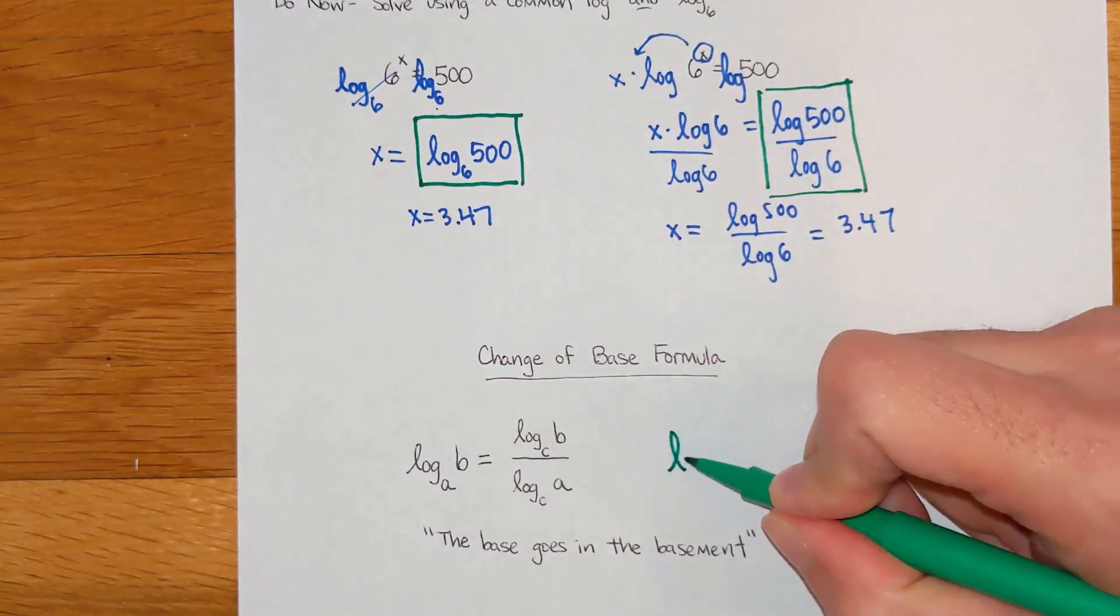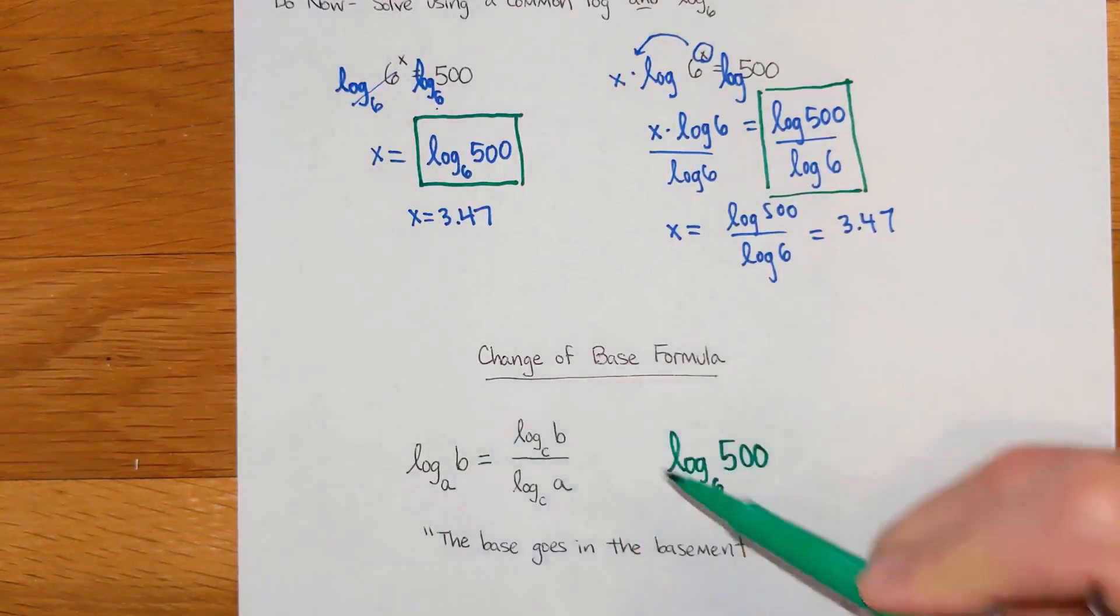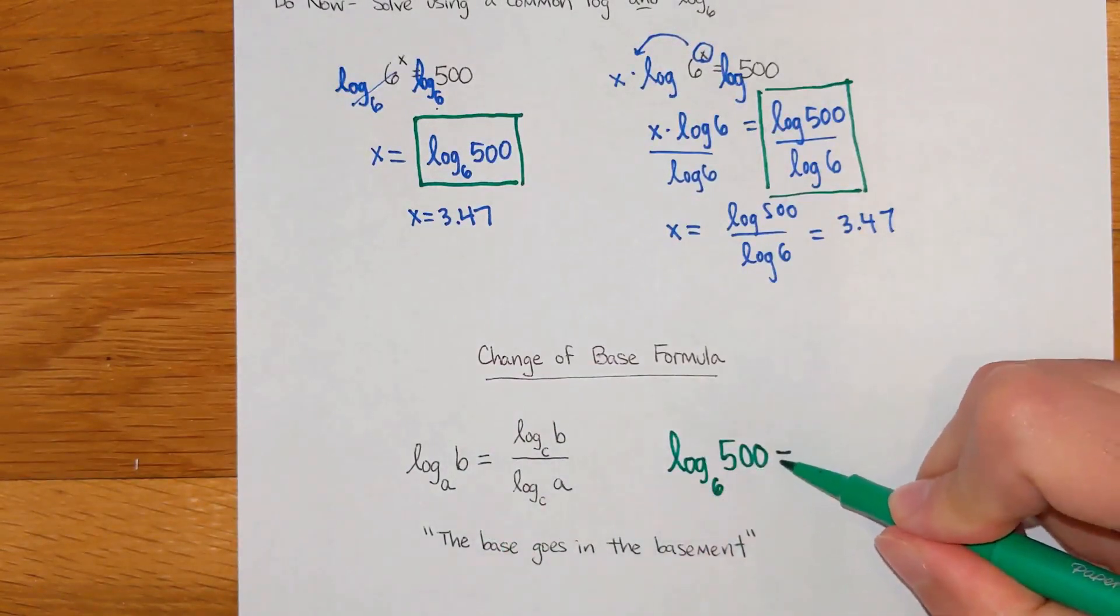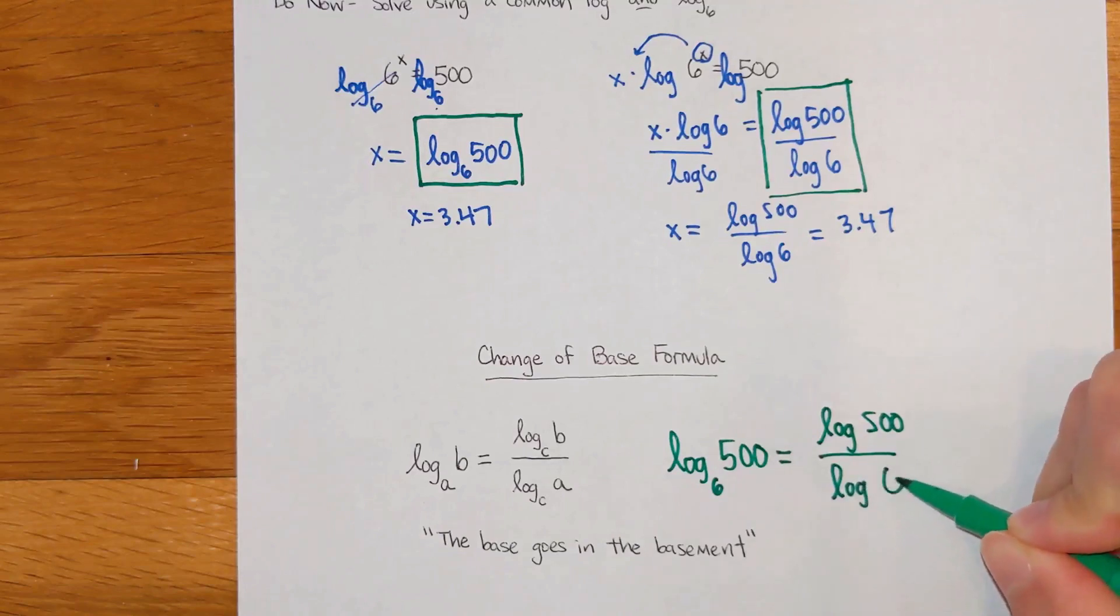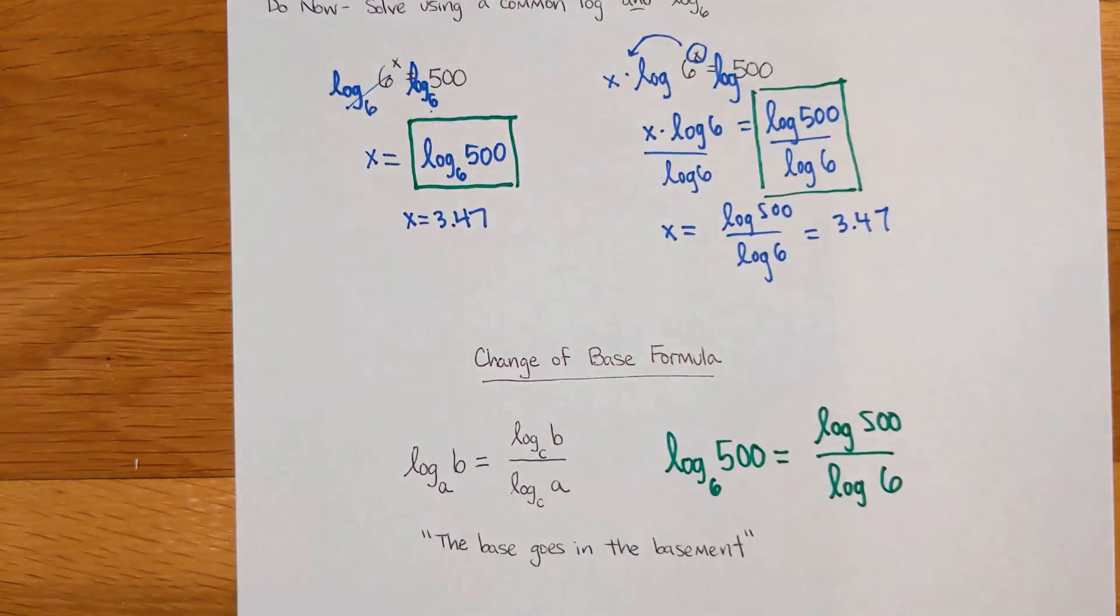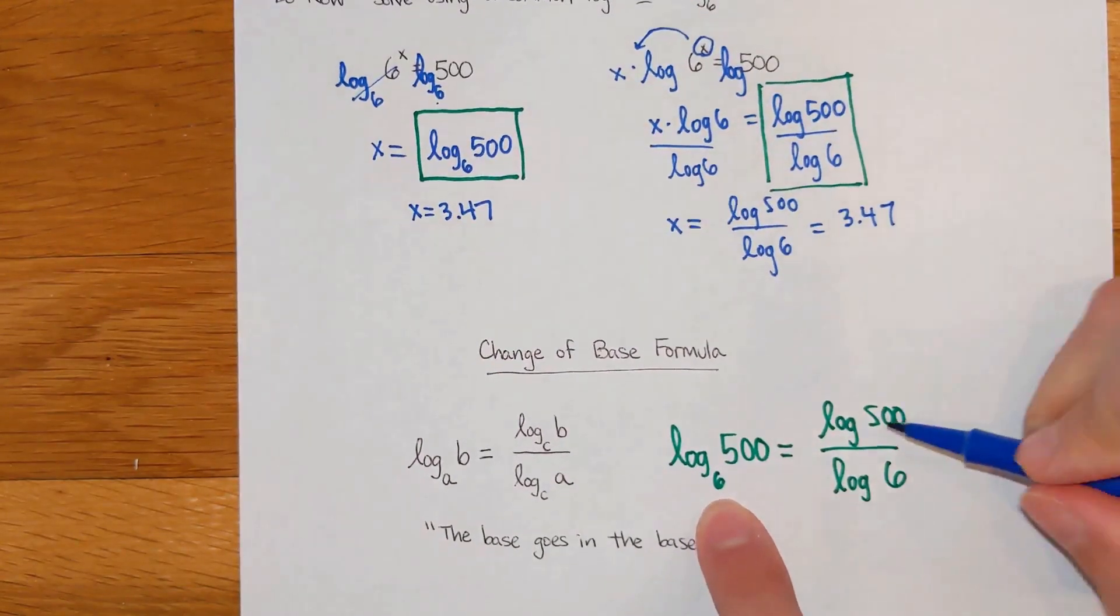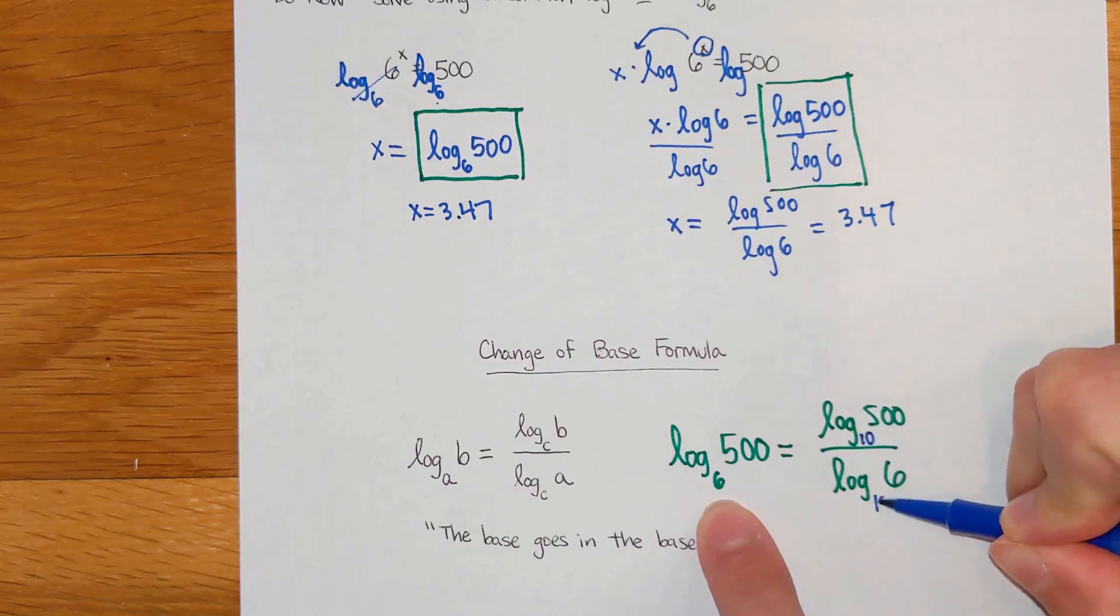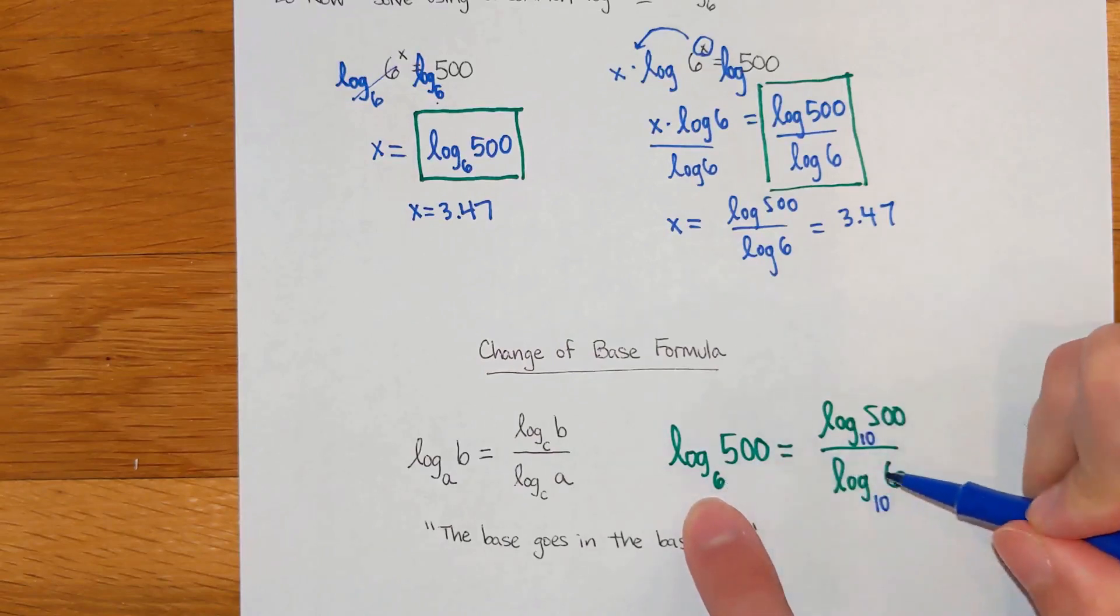I started out with log base 6 of 500. That's like my left side. So my 6 is like my A, my 500 is like my B. And this converted into log 500 over log 6. So I basically took my problem that was originally base 6, and I chose to rewrite it. So my C that I chose was a base 10. You bring in a new base, the inside goes to the top of the fraction. The old base goes to the denominator.